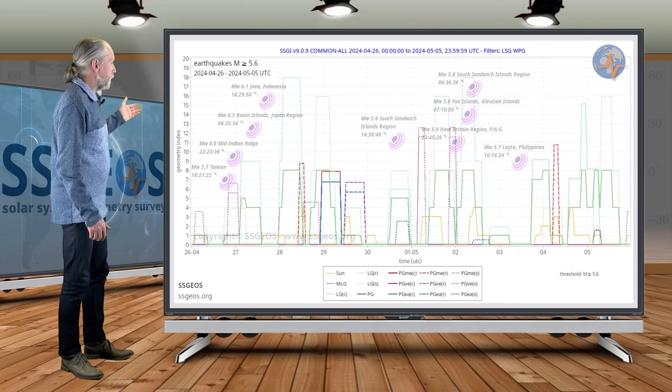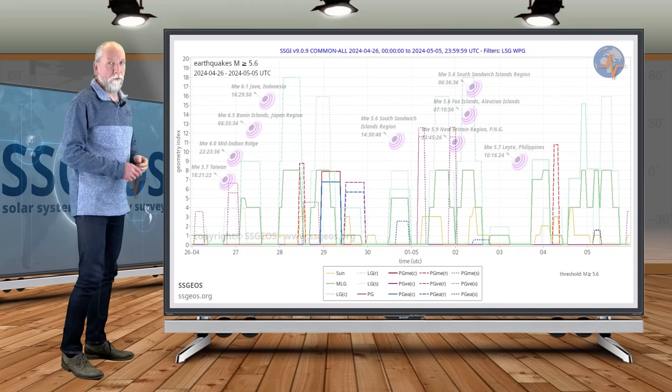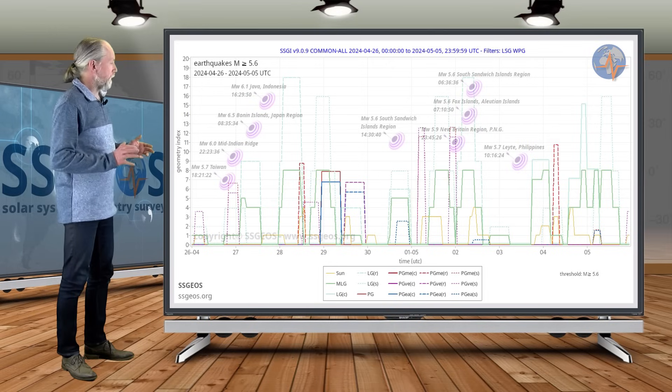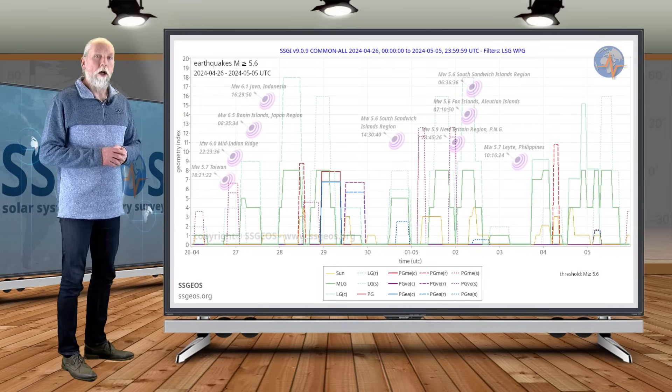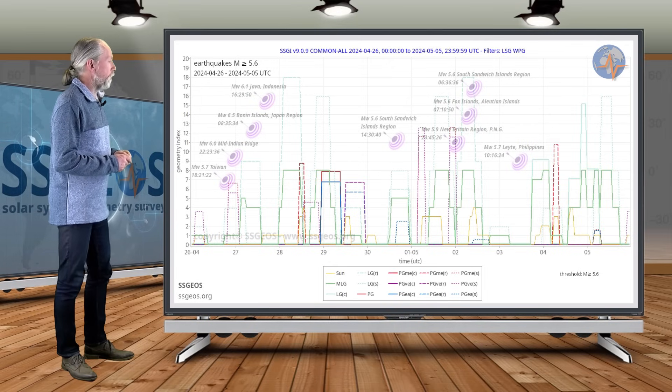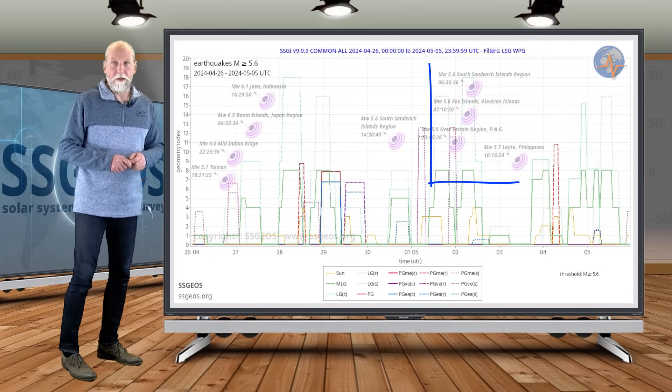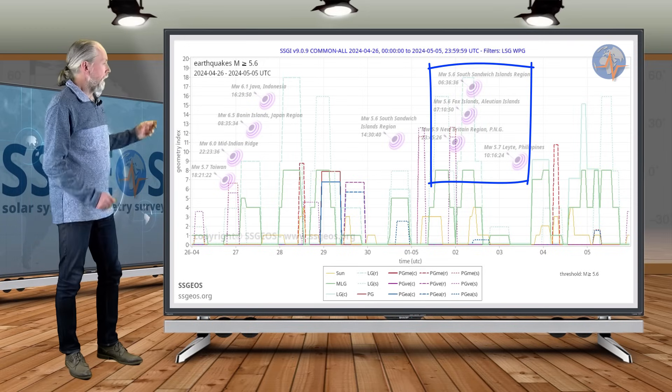Indeed, on the 27th we had a 6.5 at the Bonin Islands—not really big seismic activity but strong and also a cluster. Then also on the 2nd of May we see a cluster of stronger shaking.